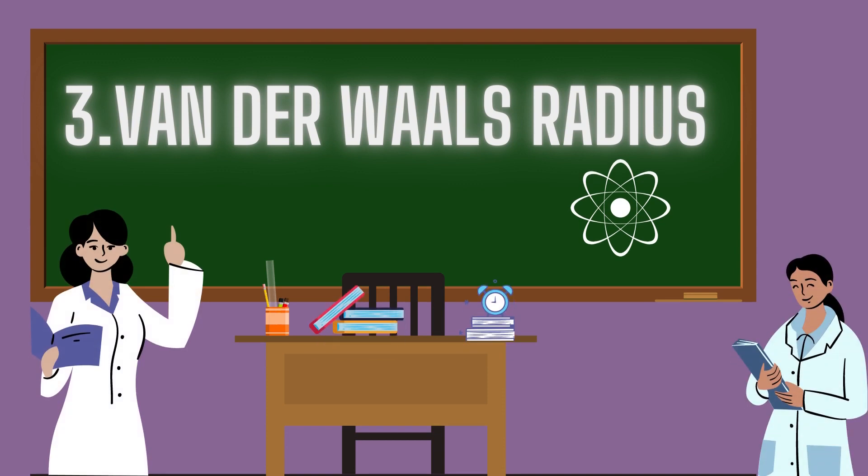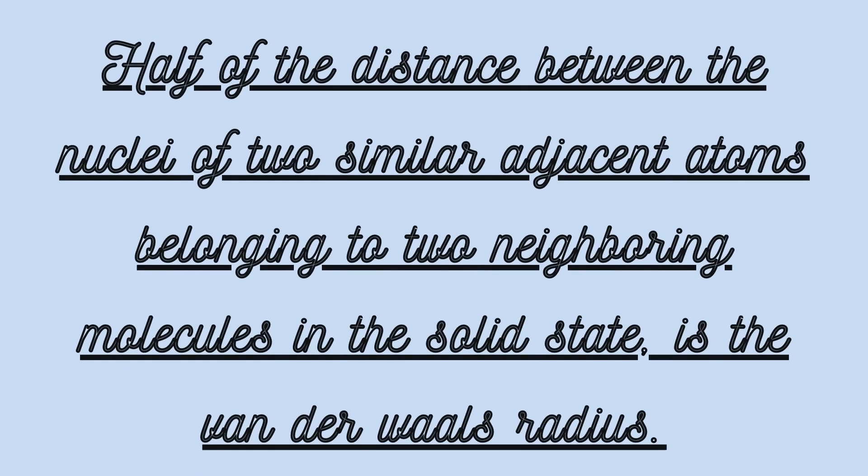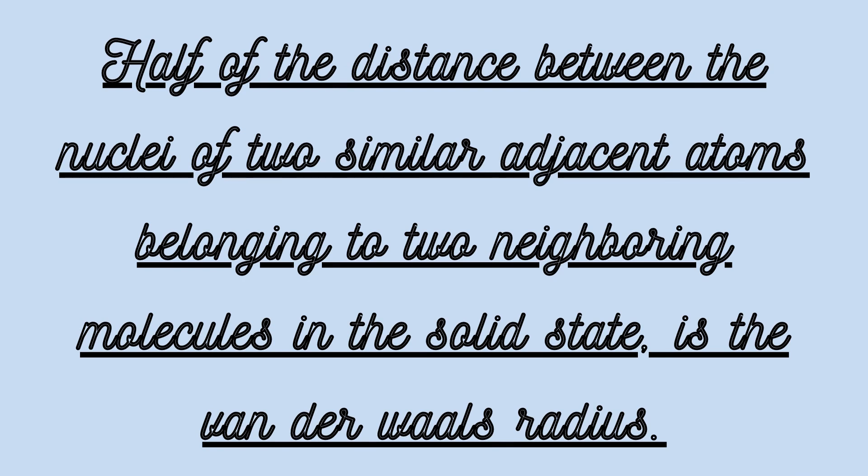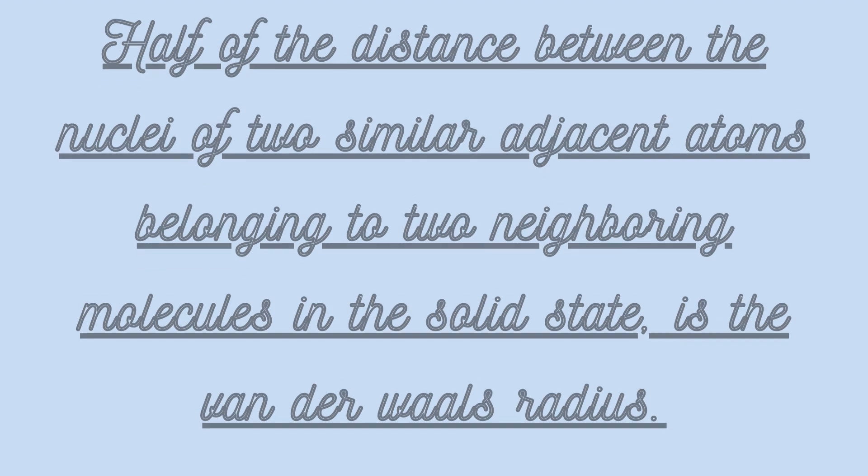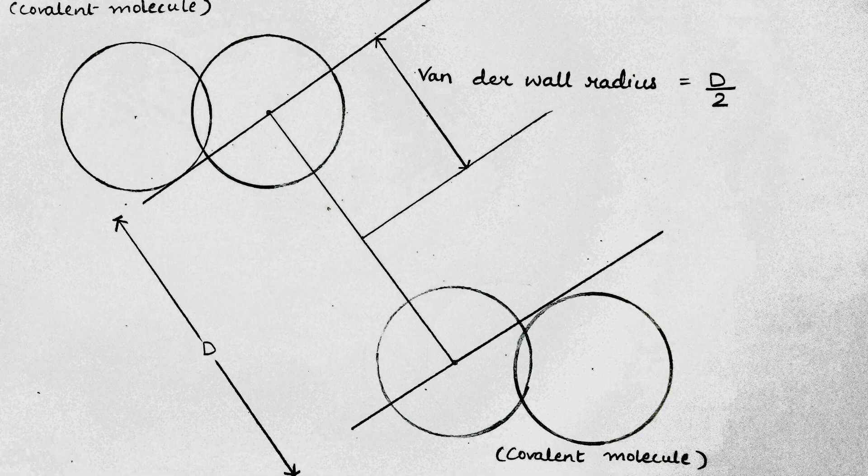Third, we will be talking about Van der Waal's radius. Half of the distance between the nuclei of two atoms, similar adjacent atoms, belonging to two neighboring molecules in the solid state is the Van der Waal's radius. Let us understand this better with the help of a diagram.